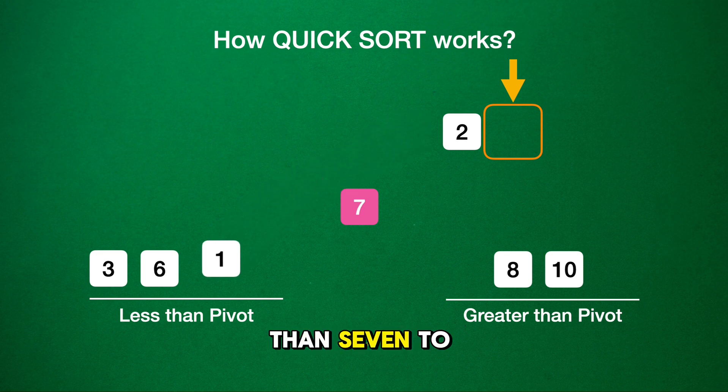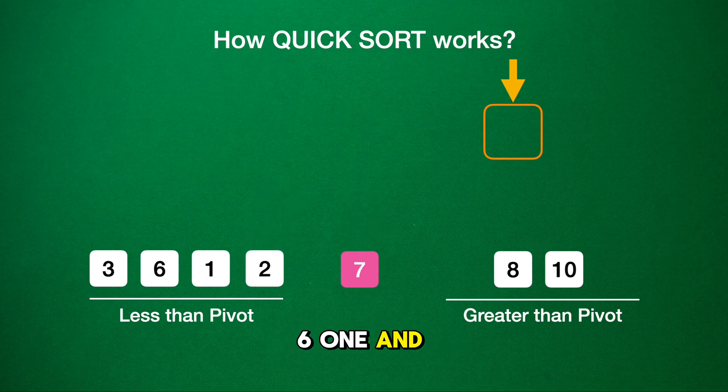1 is less than 7, to the left it goes. And 2 is less than 7, so it joins the left side. We've got 3, 6, 1, and 2 on the left of 7, and 8 and 10 on the right. 7 stays in the center for now.